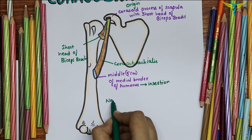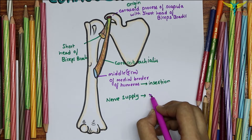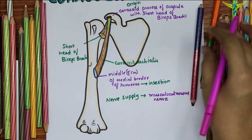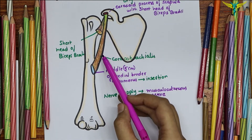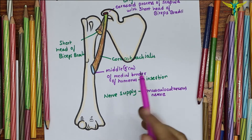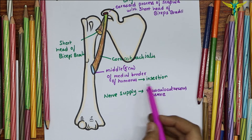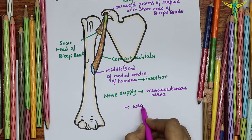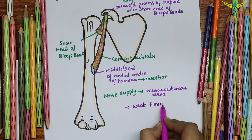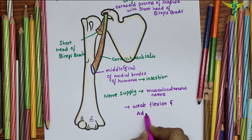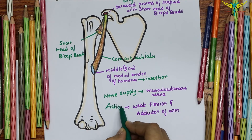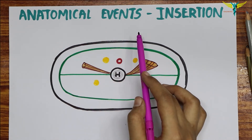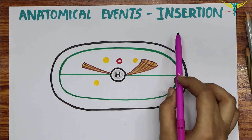The nerve supply is by the musculocutaneous nerve. The coracobrachialis is a weak flexor and adductor of the arm, so the action is weak flexion and adduction of the arm.